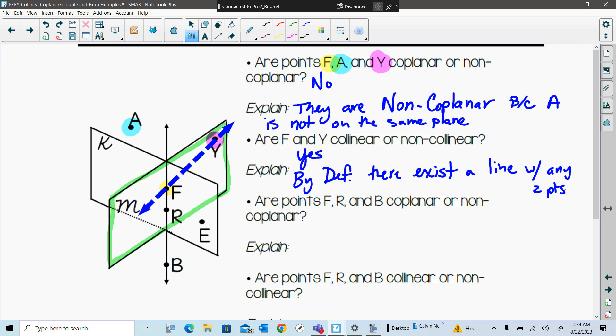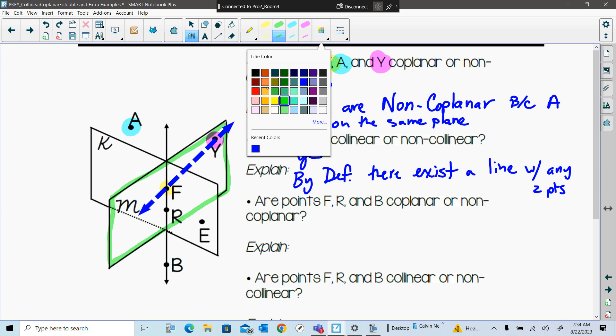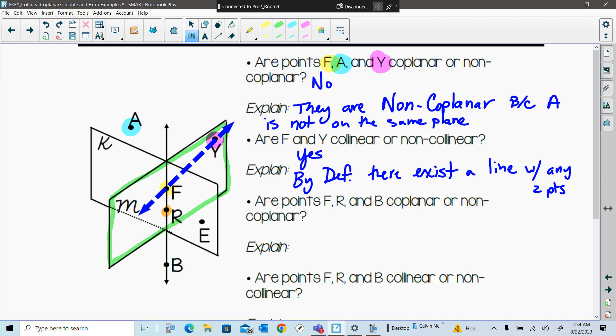Now, if I'm looking at F, R, and B, so now they want us to focus on, and I'll probably should get another color here, F, here's R over here, and then B down here. Are those coplanar or non-coplanar? Coplanar. Who proves it to be non? You're right. What makes it non-coplanar? B, yeah. B is not in the green box for me. B is not in the green box. Now, are they collinear? Yes, yes.